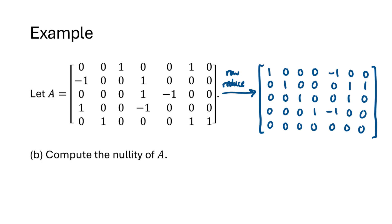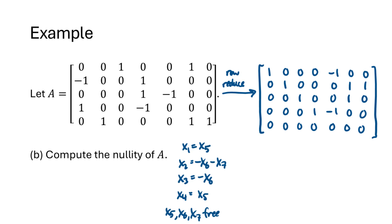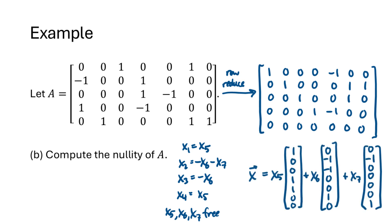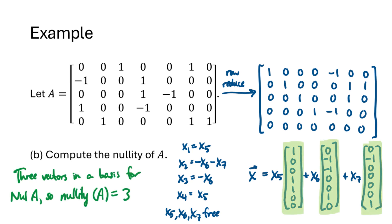Now let's compute the nullity of A. The nullity of A is the dimension of the null space of A, so we find a basis for the null space and count the vectors in that basis. To find a basis for the null space, we solve Ax = 0 and write the solution in parametric vector form. We've already row-reduced A, so we write the general solution: x1 equals x5, x2 equals negative x6 minus x7, x3 equals negative x6, x4 equals x5, and x5, x6, and x7 are all free. This lets us write the solution in parametric vector form with three vectors — one for each free variable — forming a basis for the null space. Since there are three vectors, the nullity of A is 3.